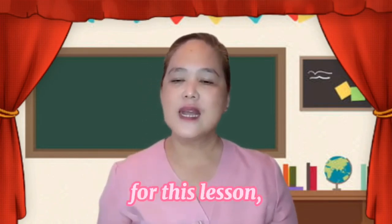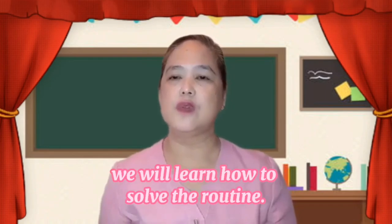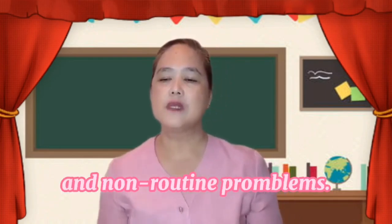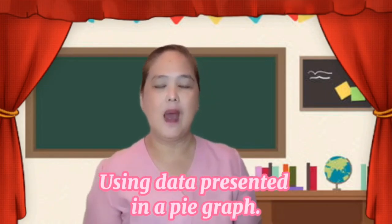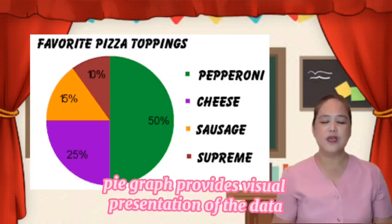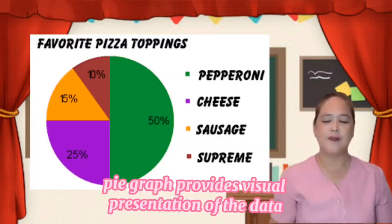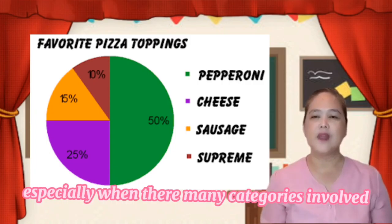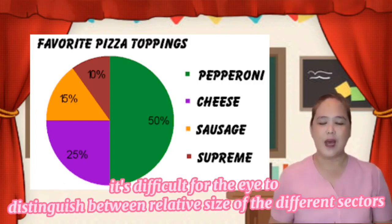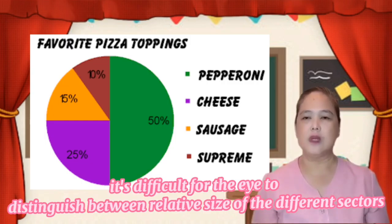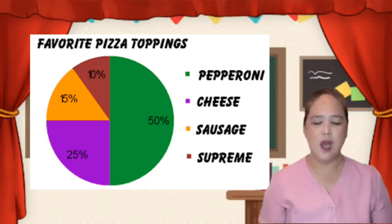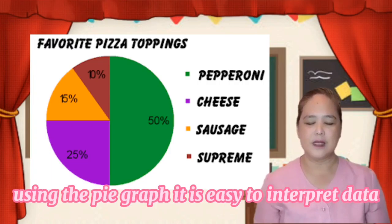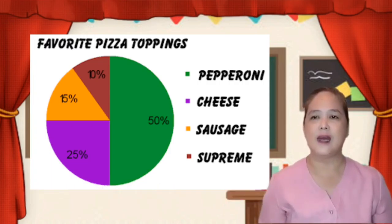For this lesson, we will learn how to solve the routine and non-routine problems using data presented in a pie graph. A pie graph provides a good visual representation of the data, especially when there are many categories involved. It is difficult for the eye to distinguish between the relative sizes of the different sectors. Using the pie graph, it is easy to interpret data.